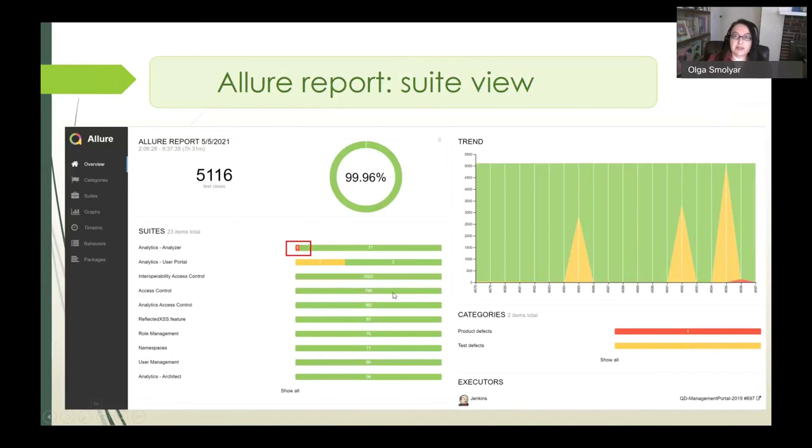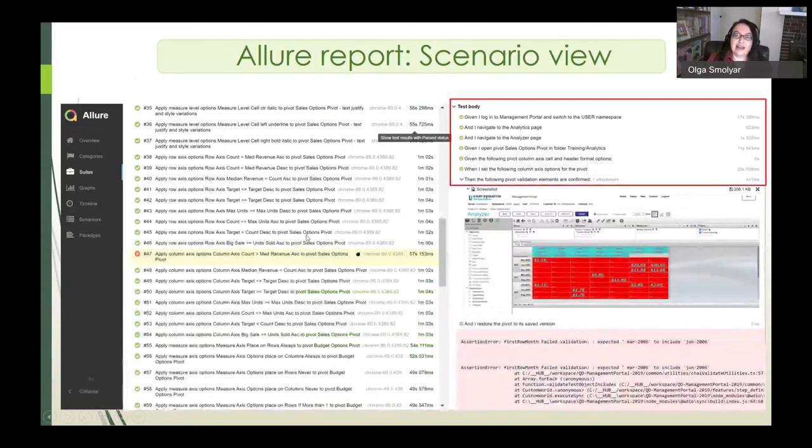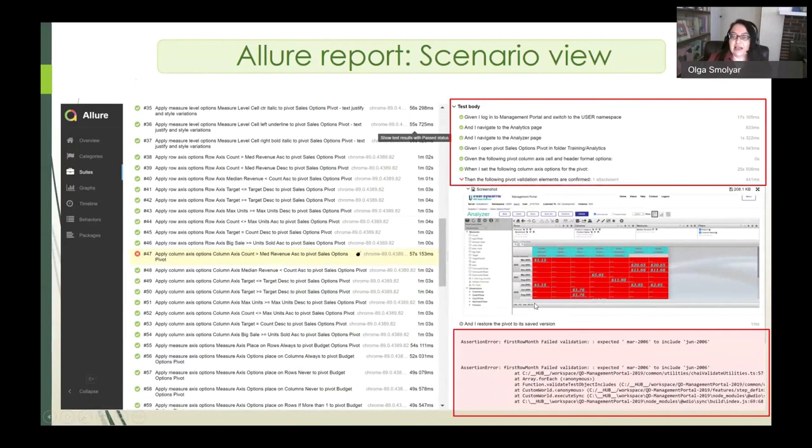Here's an example of a top level suite view of an allure report with each row here corresponding to a feature file and failures classified into product defects or assertion failures and test defects or broken tests. You can drill down to get to the scenario view which lists the names of scenarios in a feature file on the left hand column and if you select one of them it shows the steps of the scenario in the right hand panel along with screenshots and stack traces for any failed steps.